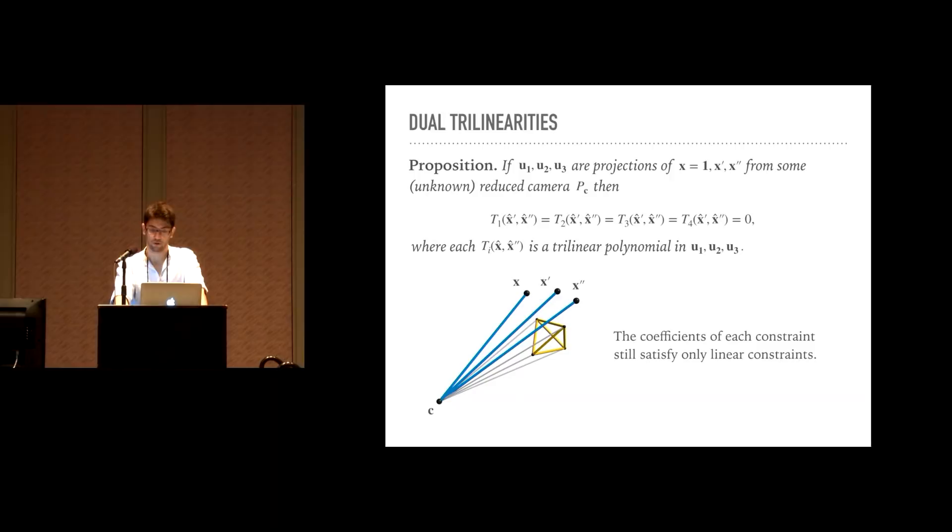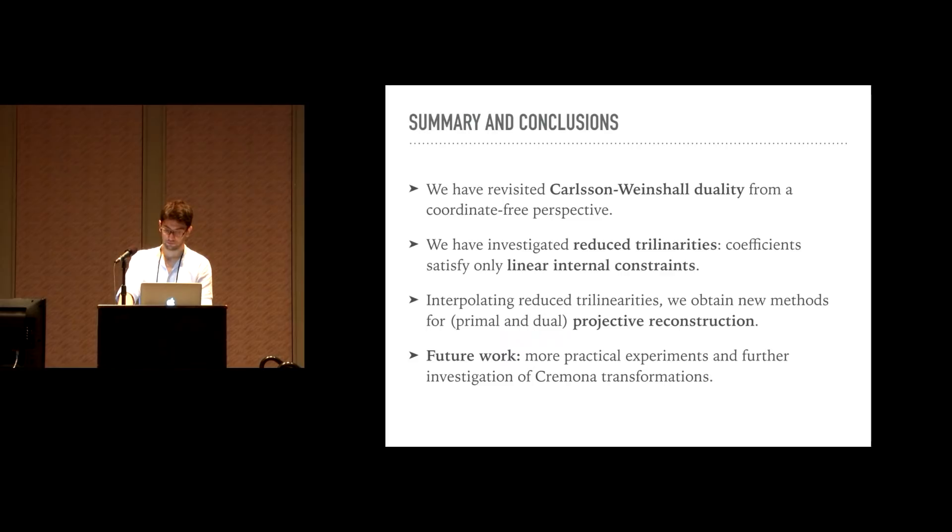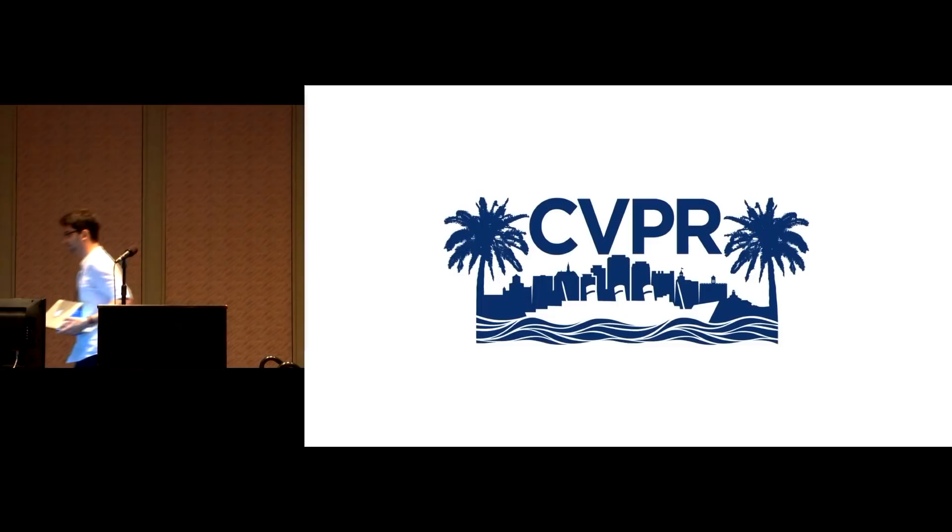Finally, we can use duality to characterize triples of points in the same image that are projections of the same fixed three points for an unknown reduced camera. This leads to constraints with the same exact form as in the primal case, but where the role of the pinholes is replaced by dual scene points. Of course, the coefficients of each of these co-trilinearities are also only constrained by linear equations. In summary, we have revisited Carlsson-Weinshall duality from a coordinate-free perspective, we have investigated reduced trilinearities, and we have shown that the coefficients of these polynomials are constrained by linear equations. By interpolating reduced trilinearities, we also obtained new methods for projective 3D reconstruction. Finally, in the future, we would like to run more experiments using our algorithm, and we would like to further investigate the geometry of Cremona transformations and the relation to multi-view reconstruction.